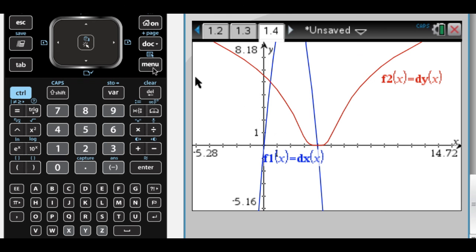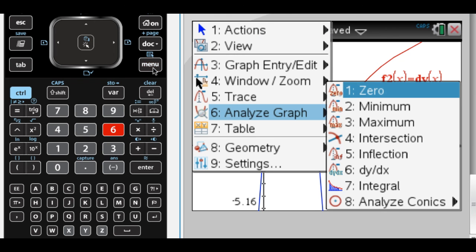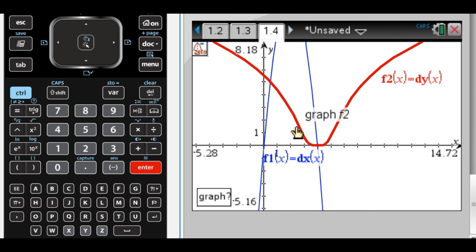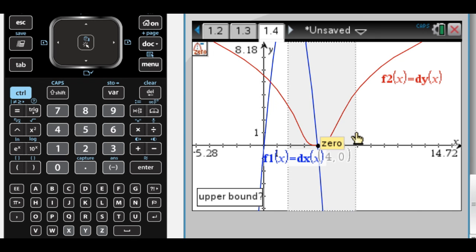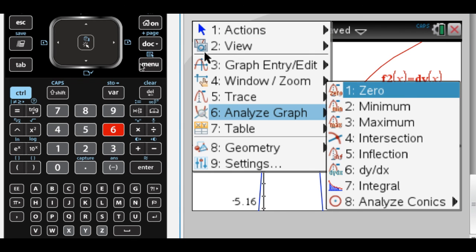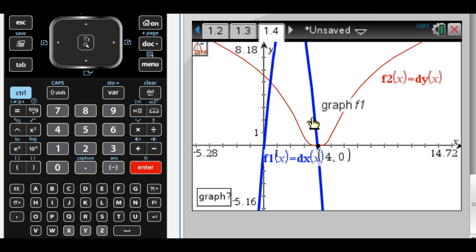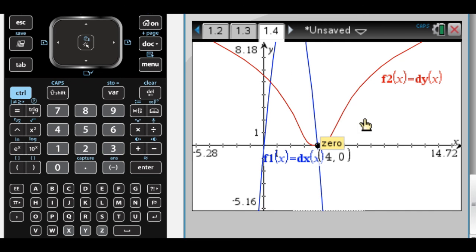So let's see if we can find that. Zero of graph 2 between there and there is 4, and then zero of graph 1 between here and here is also 4. So we can say that dx/dt and dy/dt are both 0 at t equals 4. Therefore, the object is at rest at t equals 4.